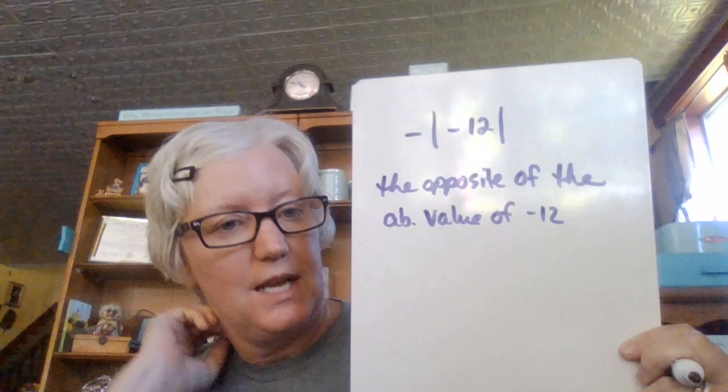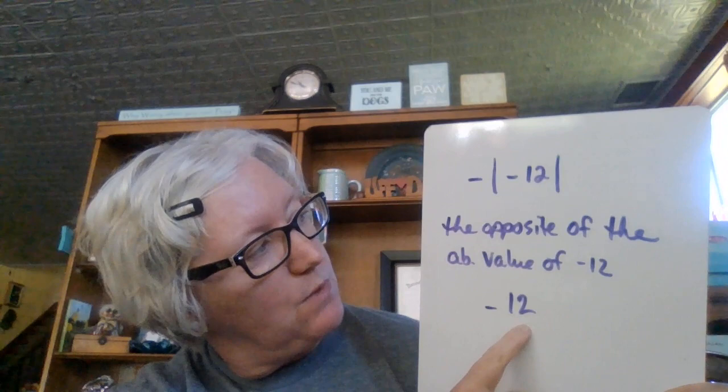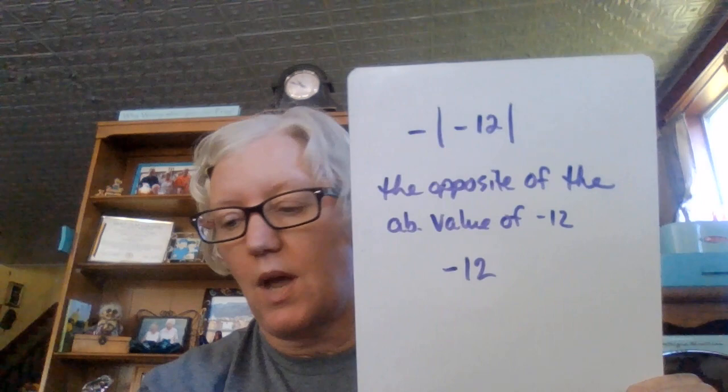Anyway, we do what's inside the brackets first, so the absolute value of negative 12 is 12. And then we want the opposite of it, so it becomes negative 12.